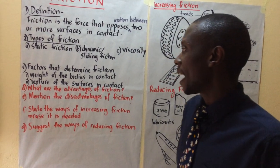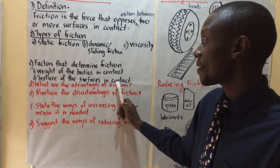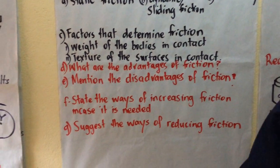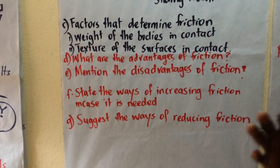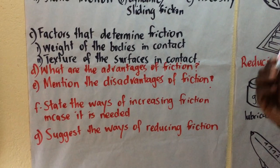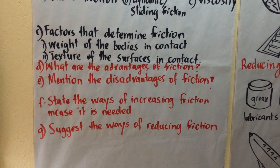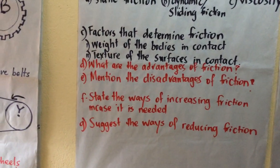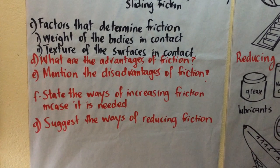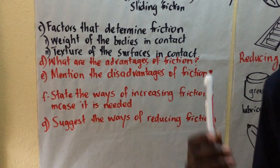The factors that determine friction are: the weight of the bodies in contact, and the texture of the surfaces in contact. The heavier the bodies in contact, the greater the friction, and vice versa. Texture means the roughness or smoothness of something — the rougher the surfaces in contact, the greater the friction, and the smoother the surfaces, the less the friction.